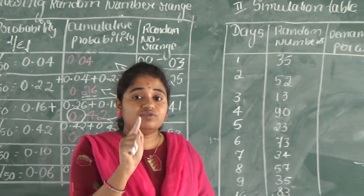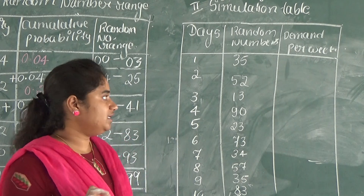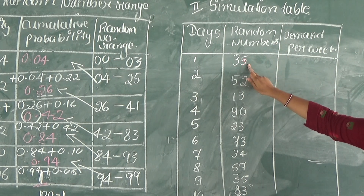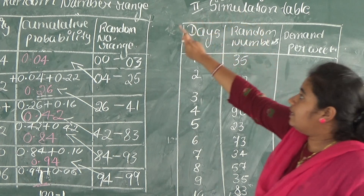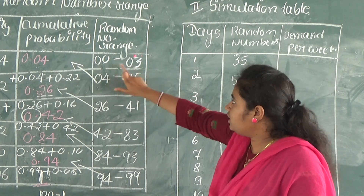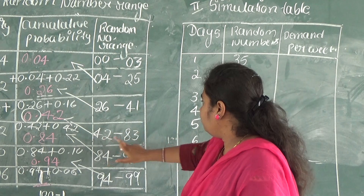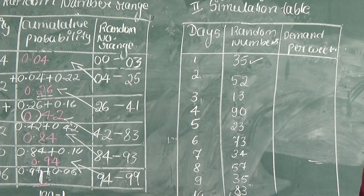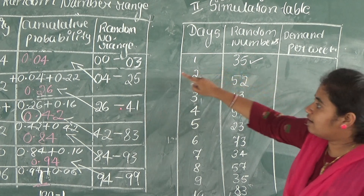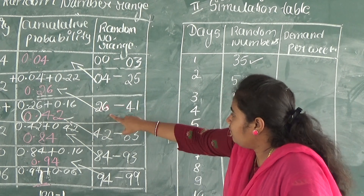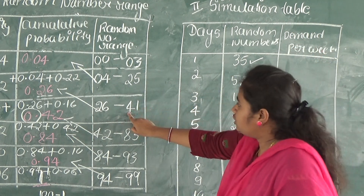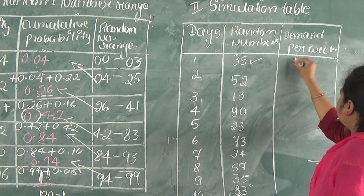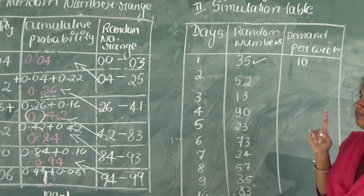To find demand per week, refer to the first table (random number range). The random number ranges are: 00–03, 04–25, 26–41, 42–83, 84–93, 94–99. The first random number is 35. Looking at the random number range, 35 falls in the range 26–41, so the demand per week is 10.